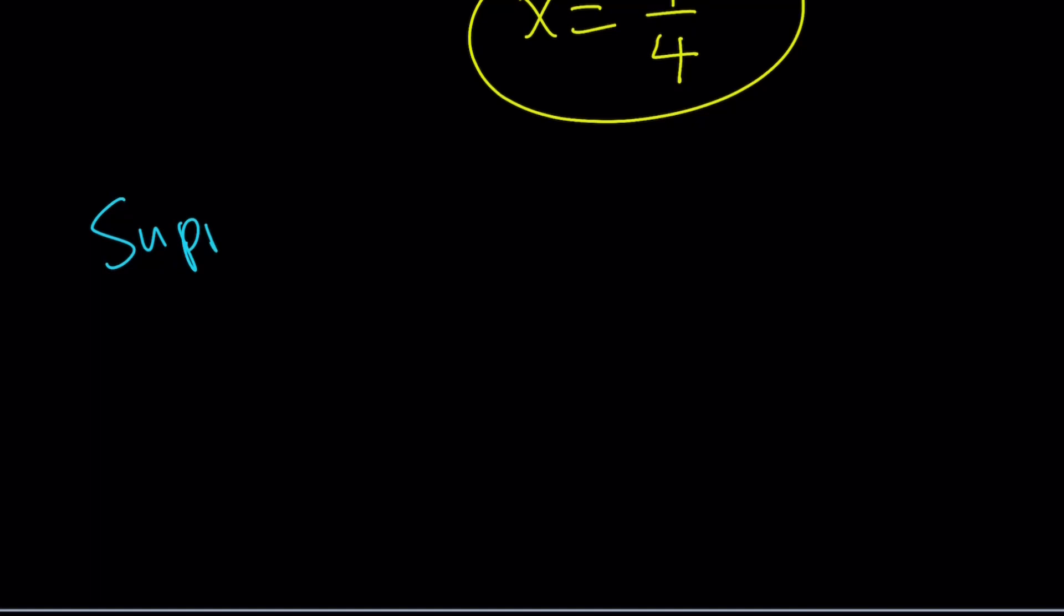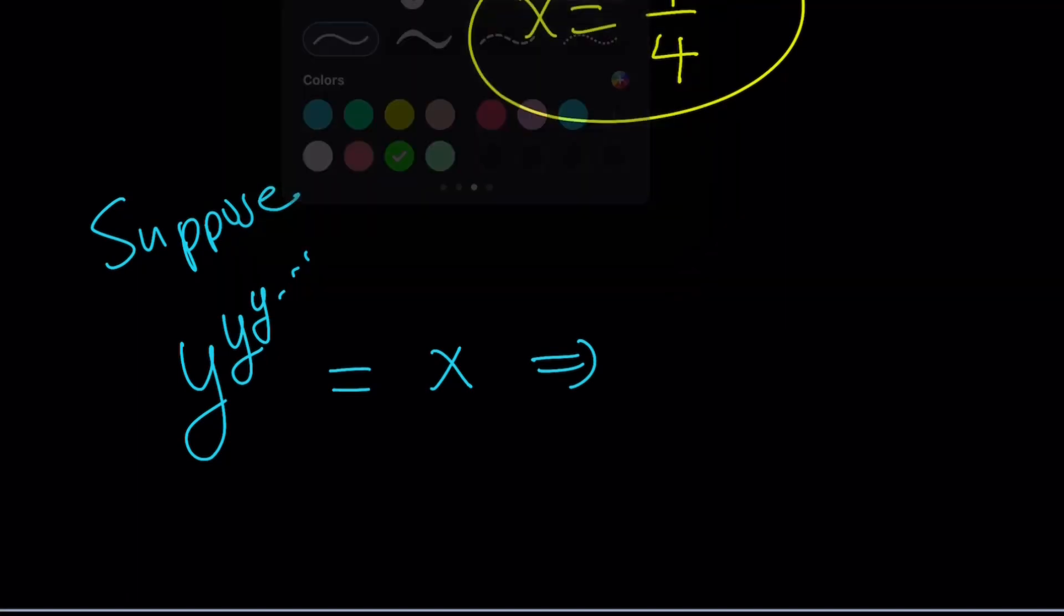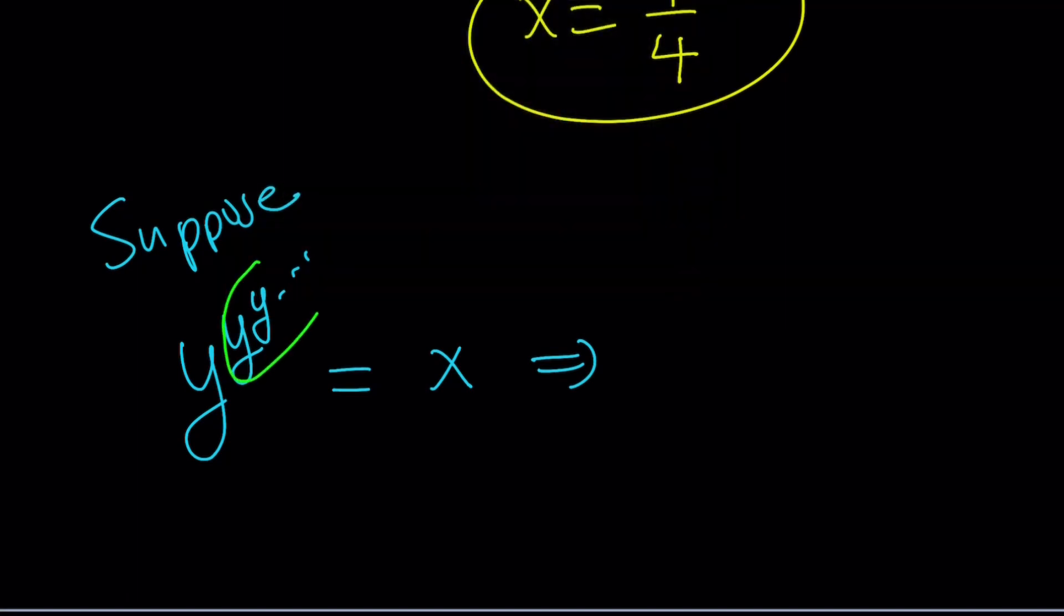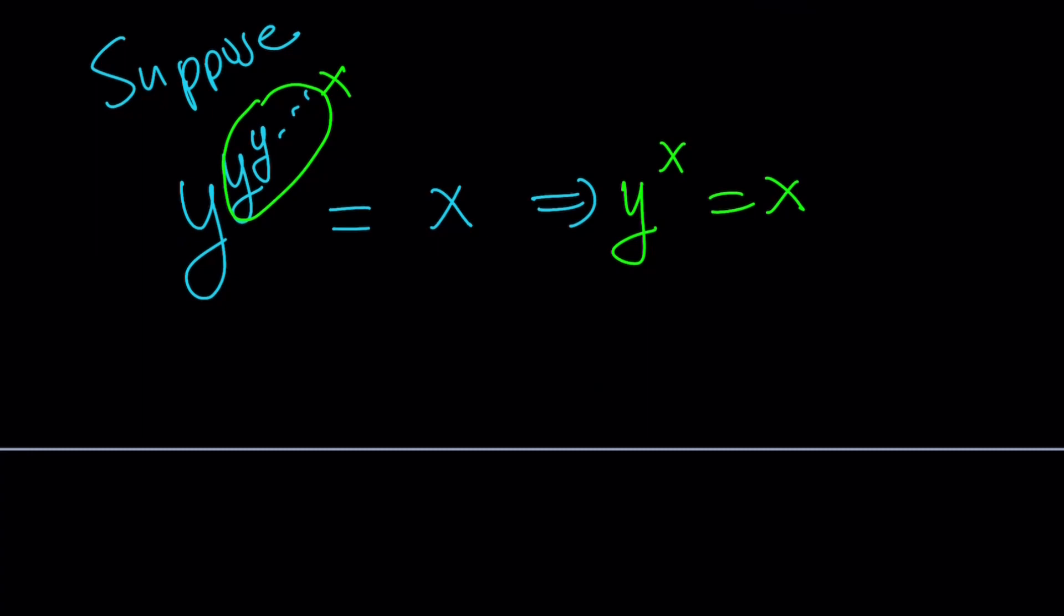Suppose we have y to the power y to the power y dot dot dot is equal to a certain x value. From here, as you know, we've done this before, this is the same thing as x. So we get y to the power x equals x. And since x does not equal 0, we can raise both sides to the power of 1 over x. So y would be x to the power 1 over x. This is the function I was looking for. This is a really nice function. I'll show you the graph of it at the end.